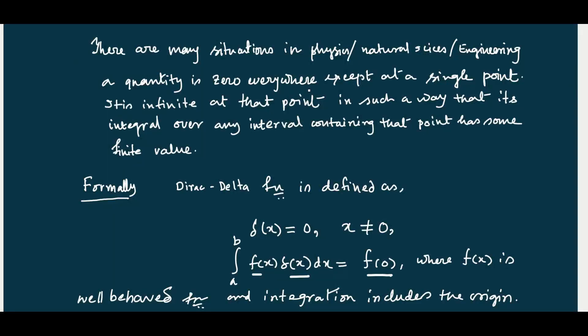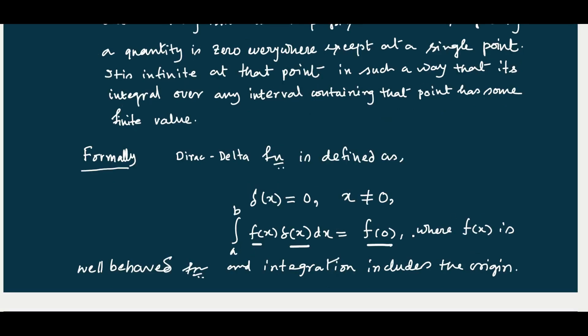There are many situations in physics, natural sciences, and engineering where a quantity is zero everywhere except at a single point. It is infinite at that point in such a way that its integral over any interval containing that point has some finite value. Formally, the Dirac delta function is defined as delta(x) equals zero where x is not equal to zero.